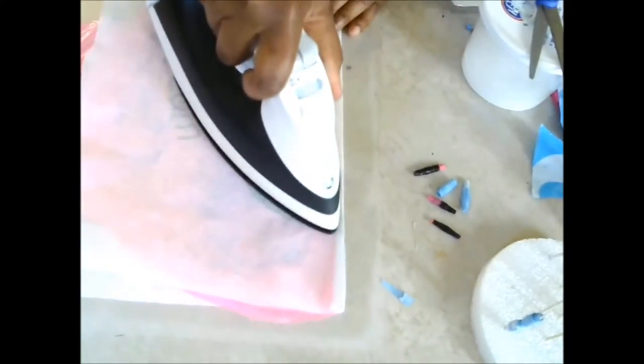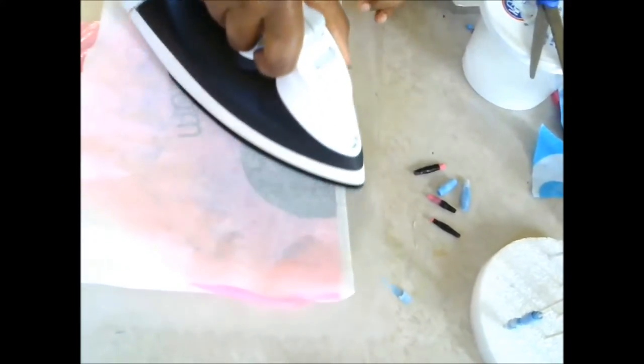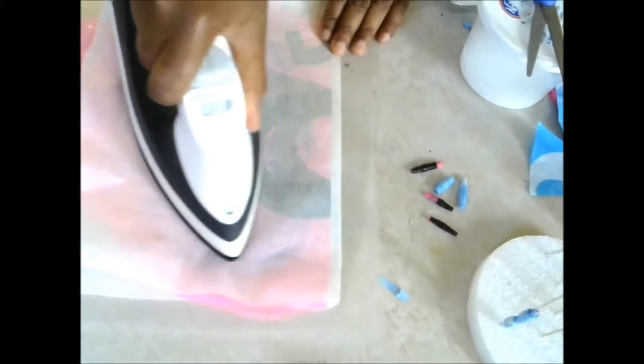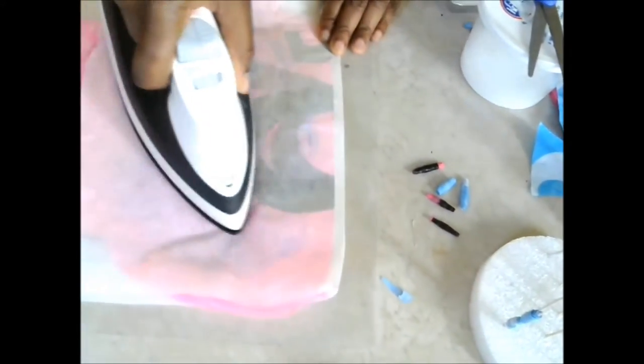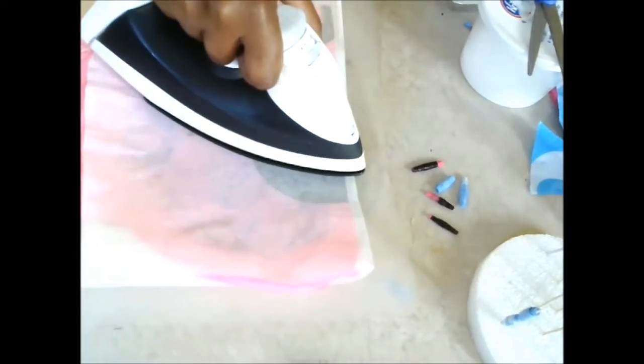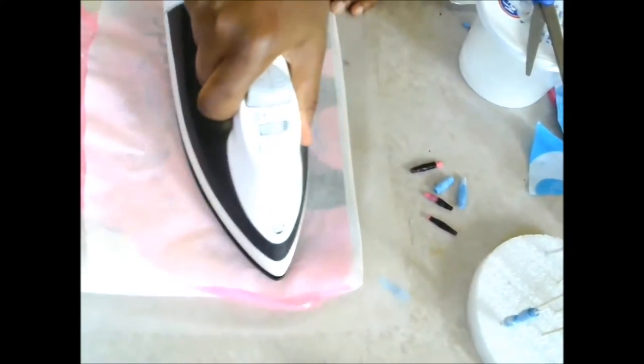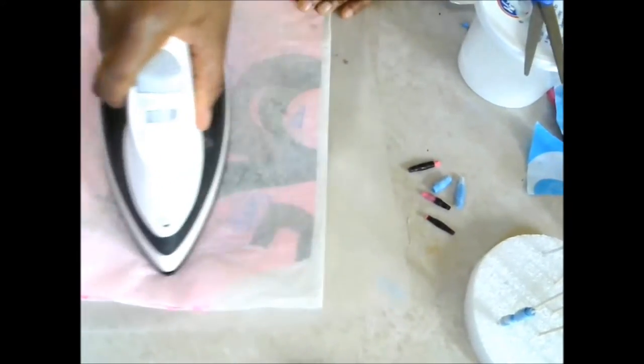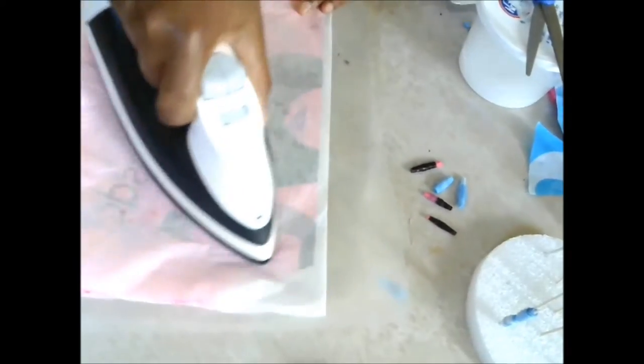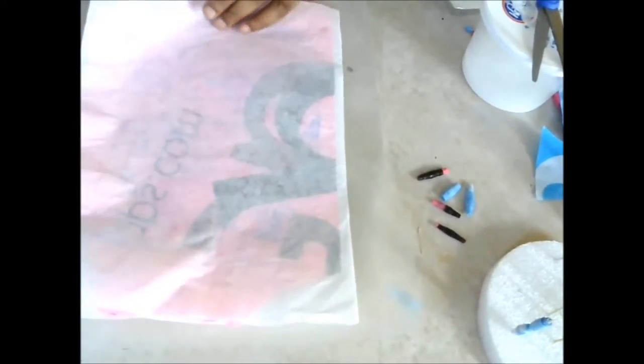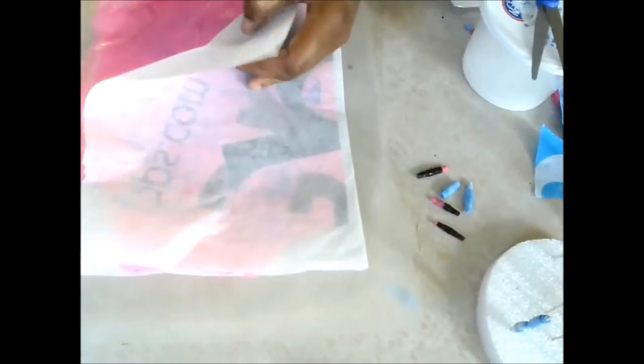You just take your iron and fuse the plastics together. Go nice and slow. Make sure you don't get any plastic on your iron - that's a pain to clean up. It doesn't take very long, like this is already fused, but I like to do the back also. I'll show you what we have. You just take the parchment and what you have is a fused piece of plastic that you can use to make your beads.